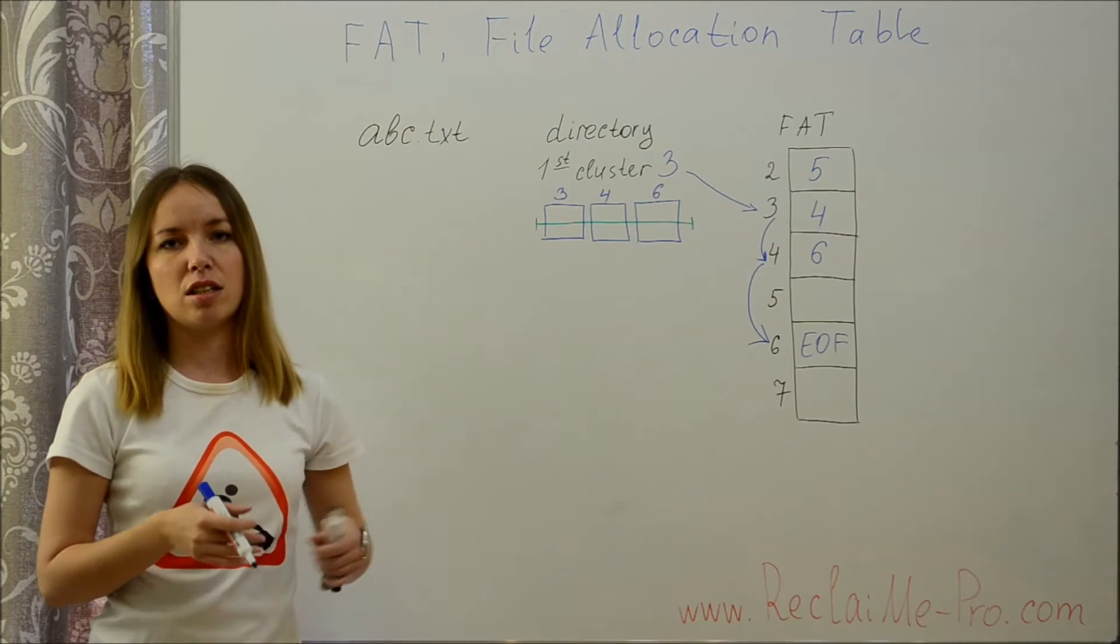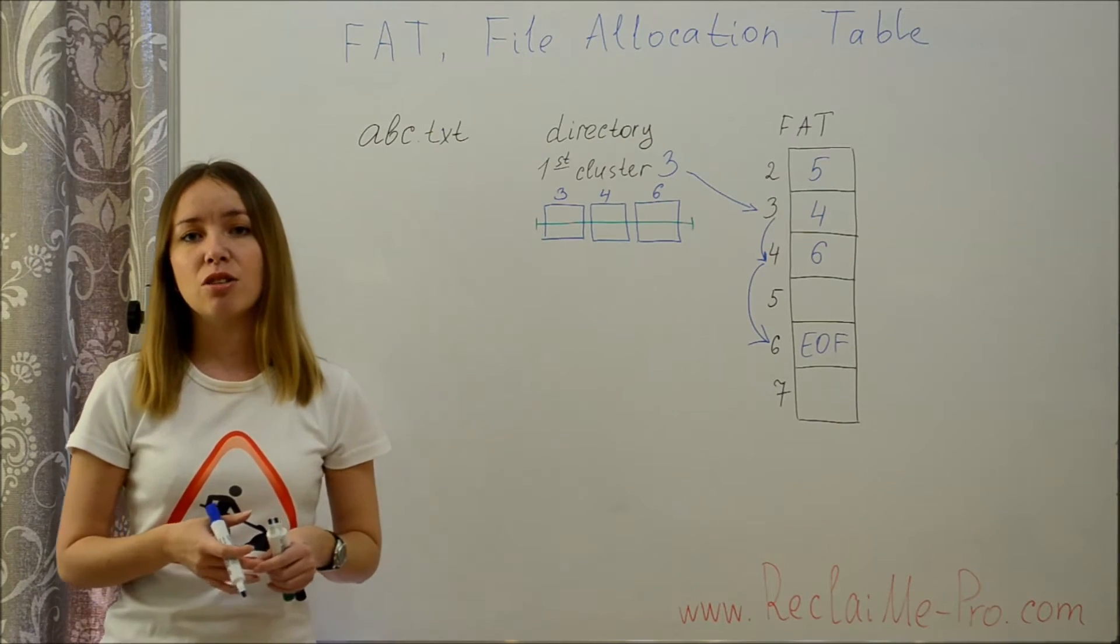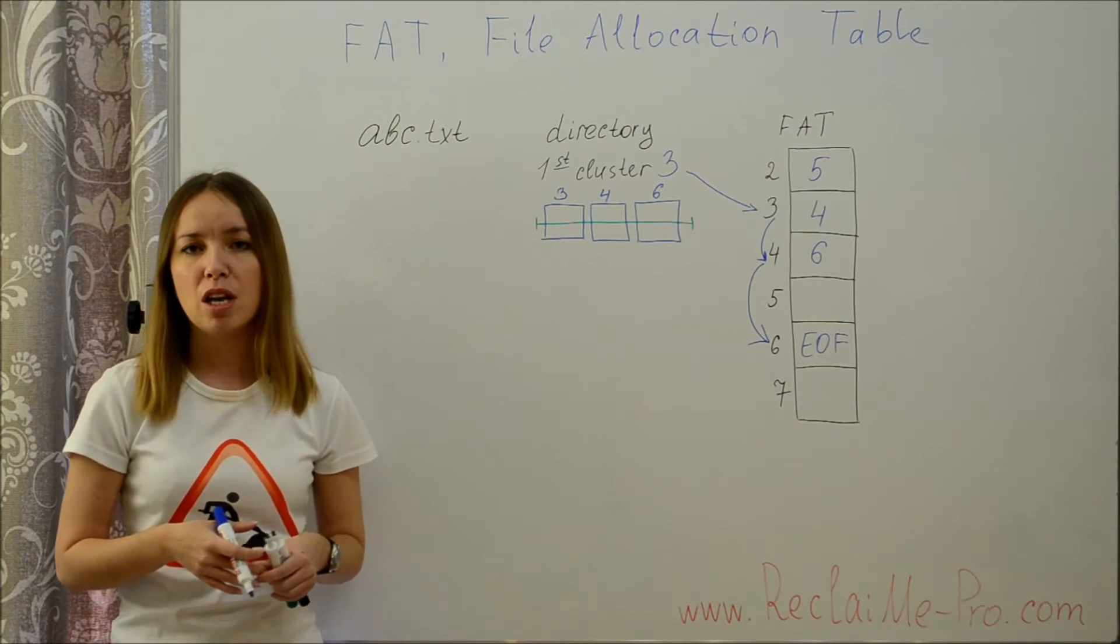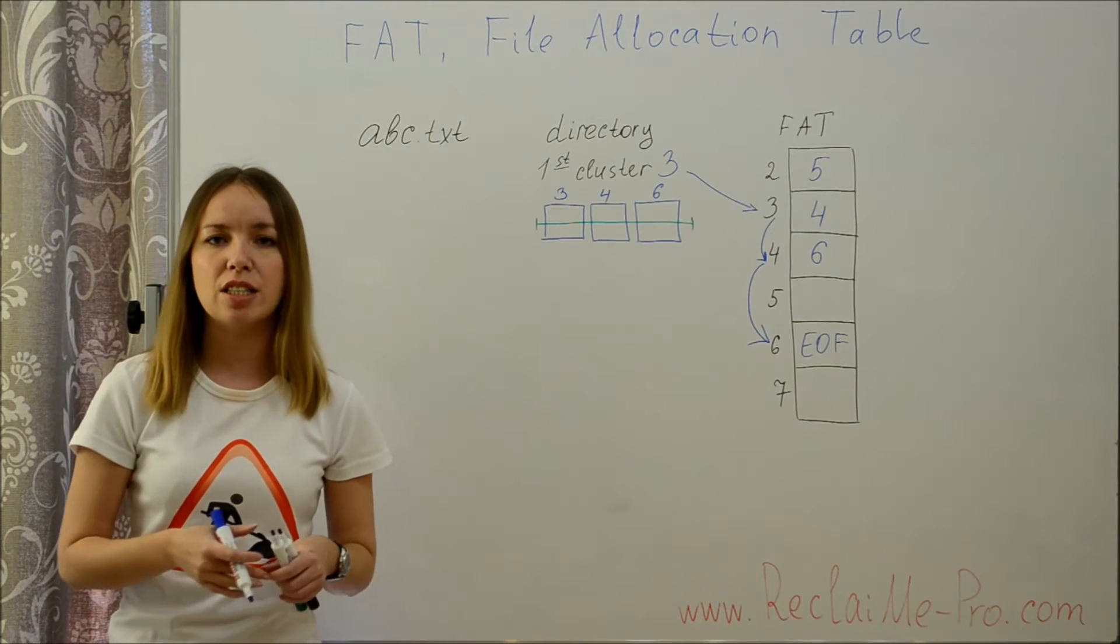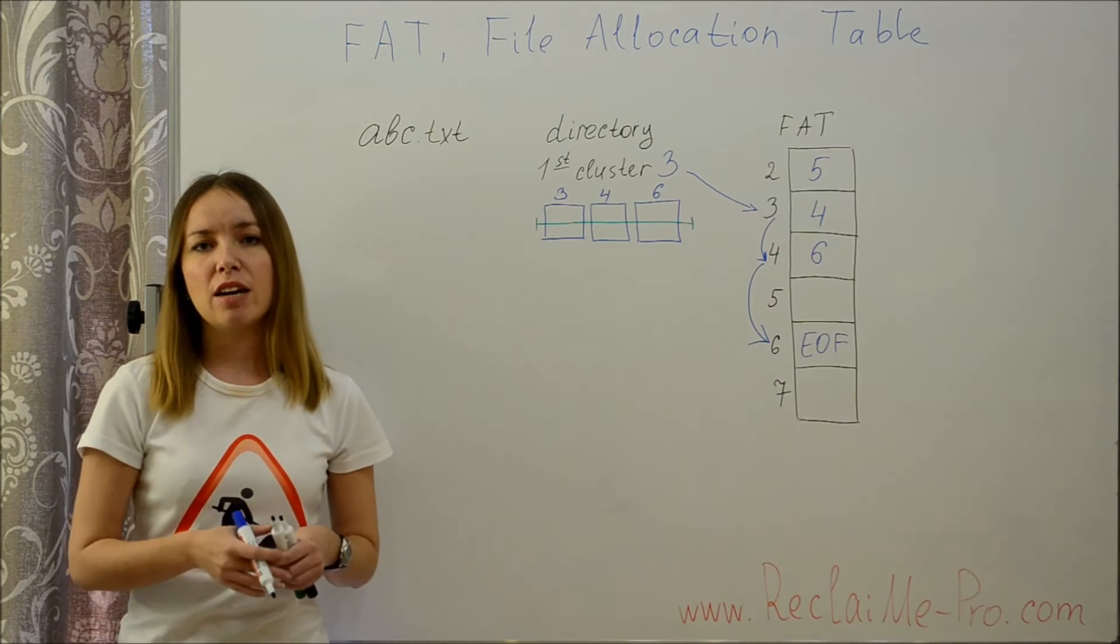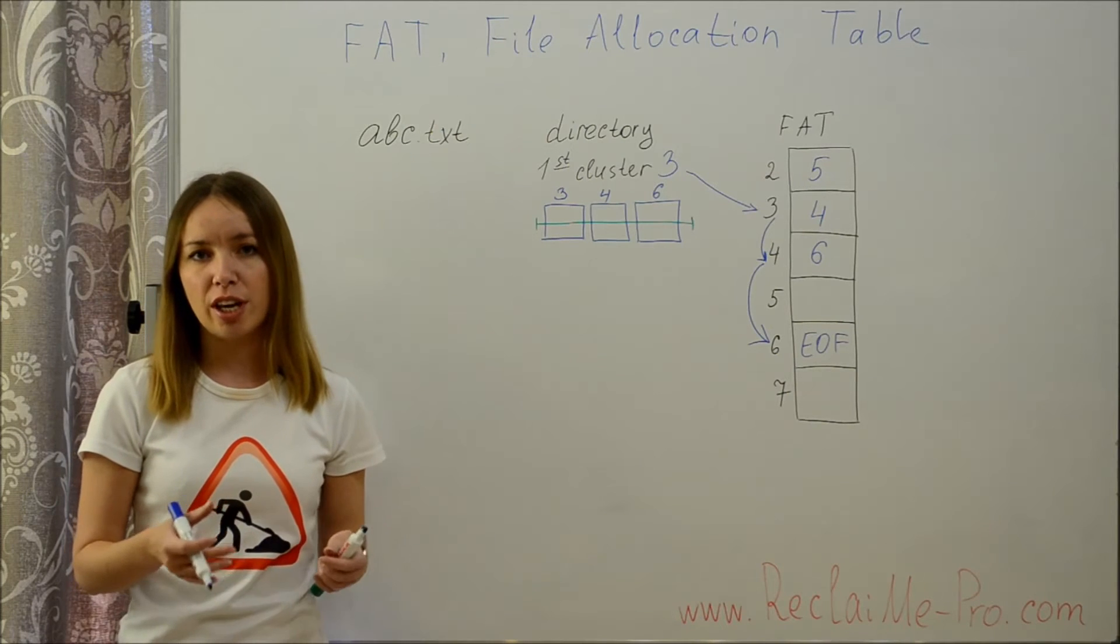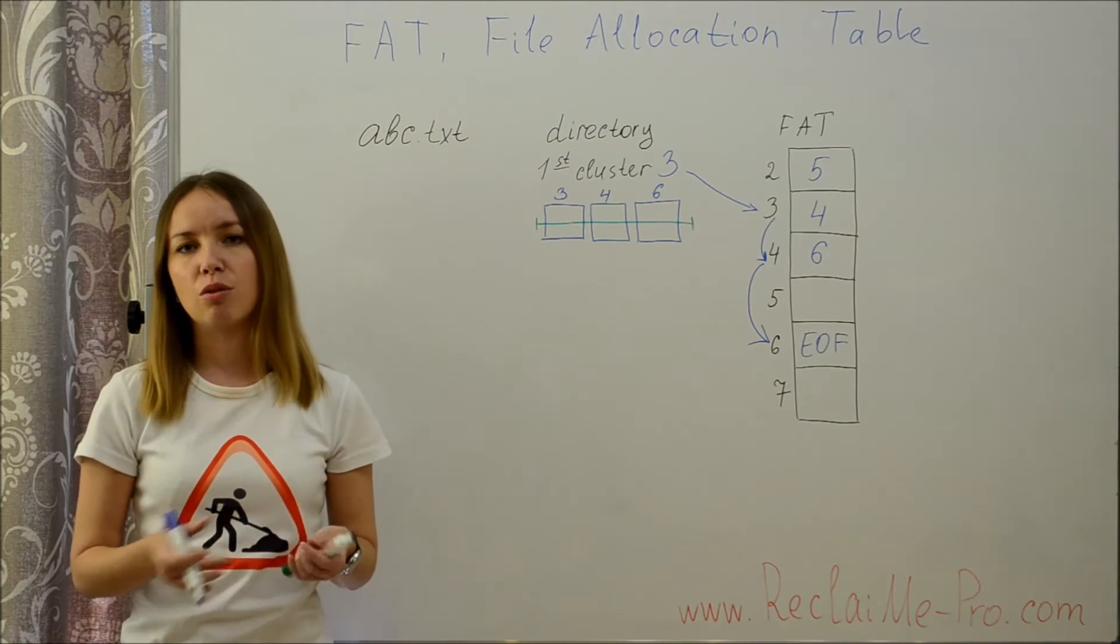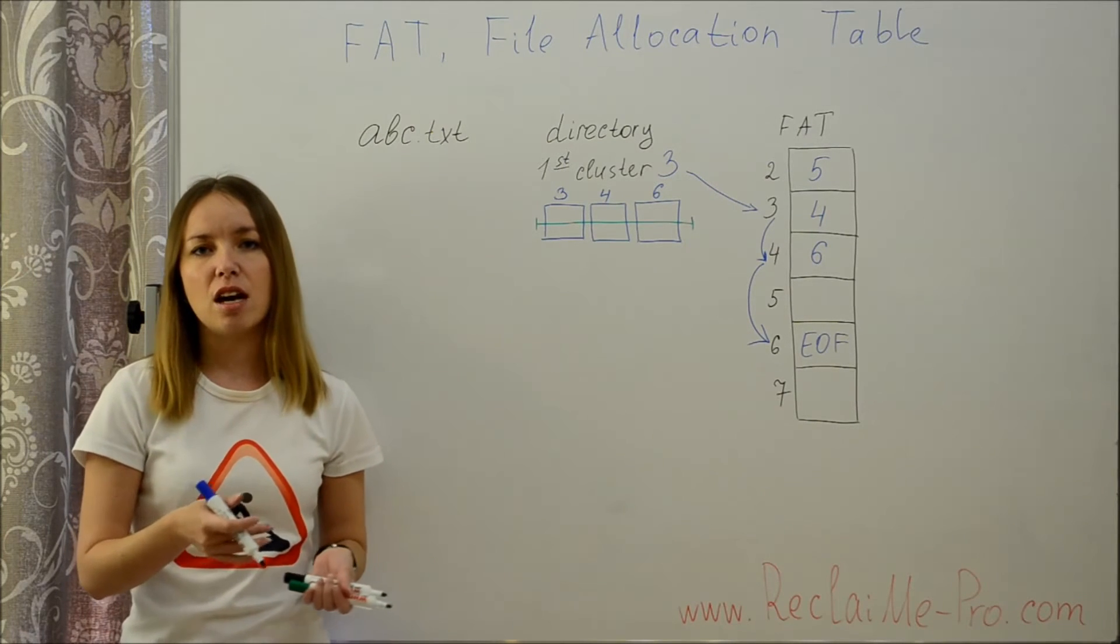Since metadata is stored in different places, is updated independently and is not synchronized as well as we would like, sometimes some contradictions may happen. For example, a directory may point to a free cluster, cluster chains may form loops, a directory may link to the middle of a chain, or two chains may have common tail and so on.